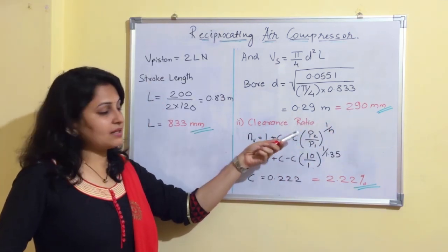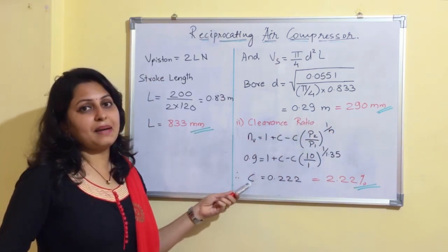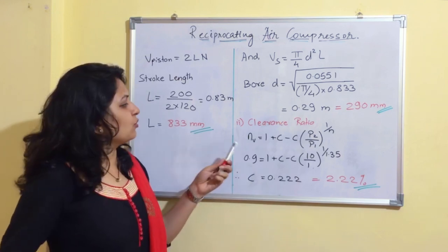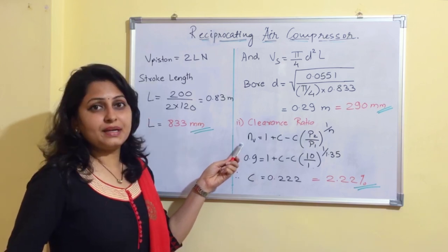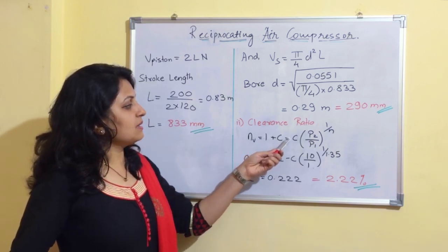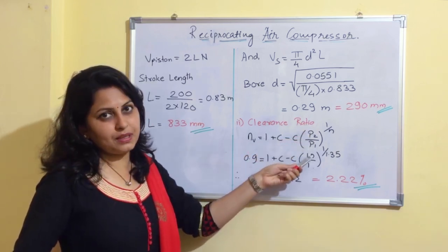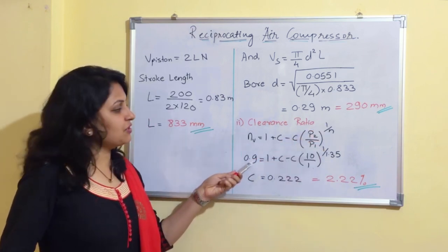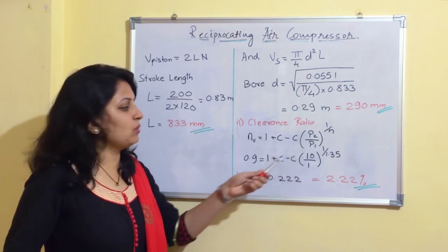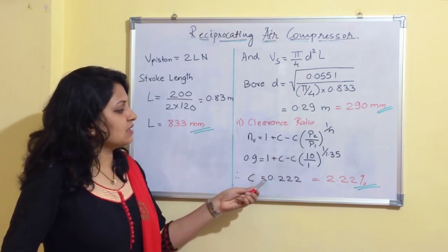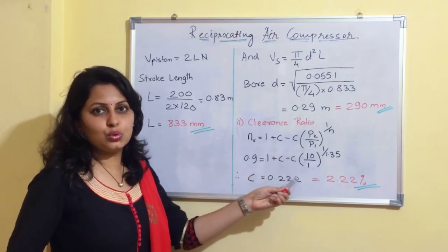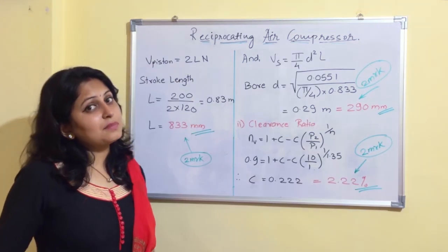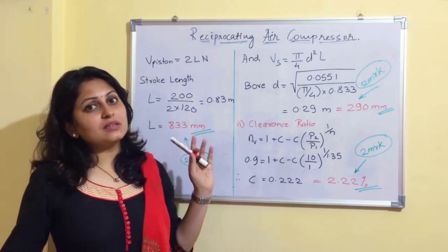The next point is to find the clearance ratio C = Vc/Vs. Using the volumetric efficiency formula: η_vol = 1 + C − C·(P2/P1)^(1/N), and substituting volumetric efficiency = 90% and pressure ratio P2/P1 = 10, we get C = 0.222. This is typically expressed as a percentage.